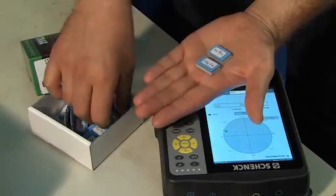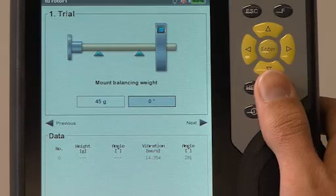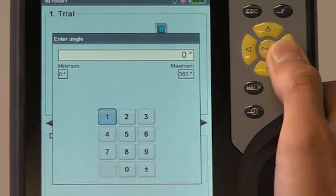In the following step, a known trial weight is attached to the rotor, and its weight and location are entered in the smart balancer.